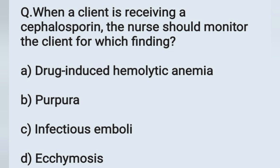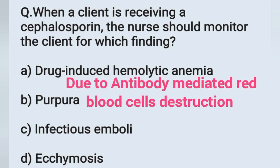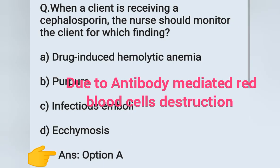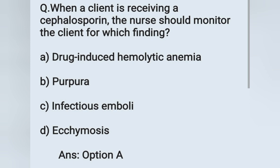Next question: When a client is receiving a cephalosporin, the nurse should monitor the client for which finding? Option A: drug-induced hemolytic anemia, option B: purpura, option C: infectious emboli, option D: ecchymosis. Cephalosporin is a broad-spectrum antibiotic. When a patient is receiving cephalosporin, the nurse should monitor for drug-induced hemolytic anemia, because there is a chance of antibody-mediated red blood cell destruction, leading to anemia. Option A is the correct answer.